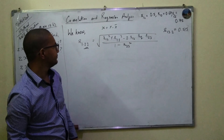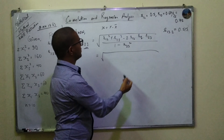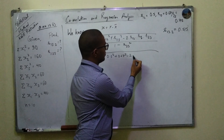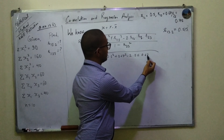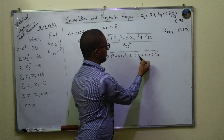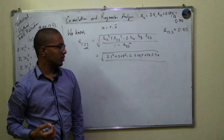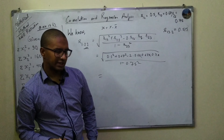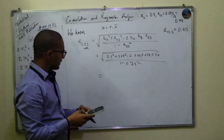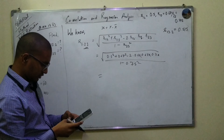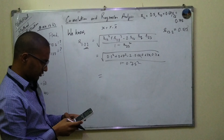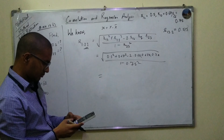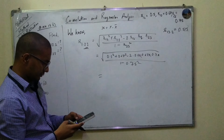The formula for multiple correlation R1.23 squared equals (r12 squared plus r13 squared minus 2 times r12 times r13 times r23) divided by (1 minus r23 squared). Substituting values: 0.5 squared plus 0.67 squared minus 2 times 0.5 times 0.67 times 0.75, all divided by (1 minus 0.75 squared).